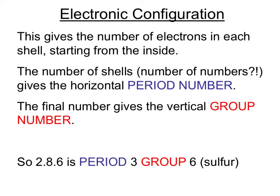So if we had an electronic arrangement of two, eight, six, this would tell us because there's three numbers there, it's period three. And because the last number is a six, it's group six, which would allow us to identify this as sulfur.